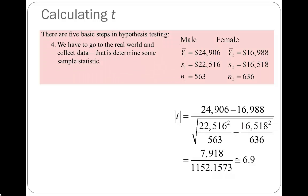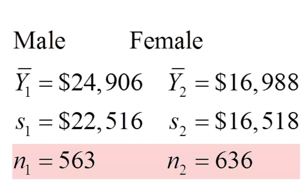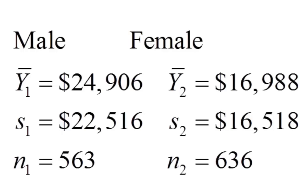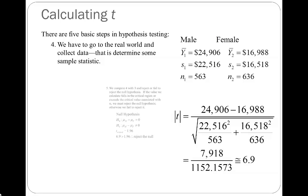Any time you calculate a difference of means test by hand you need six pieces of information: the mean, standard deviation, and sample size for each of your two groups. Mean male income is $24,906 with a standard deviation of $22,516 and 563 men in the sample, and I have the same information for women. Plugging these into the equation, my t-statistic is $8,000 divided by the standard error, giving a t-statistic of 6.9.